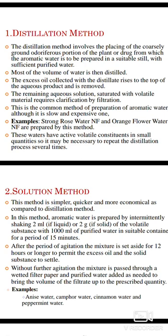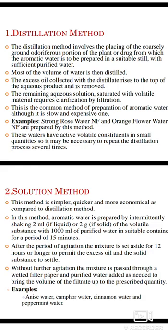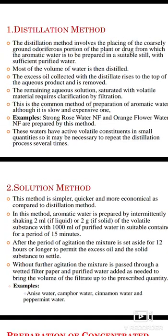The remaining aqueous solution, saturated with volatile material, requires clarification by filtration. This is the common method of preparation of aromatic water, although it is slow and expensive. Examples: strong rose water NF and orange flower water NF are prepared by this method. These waters have active volatile concentrate in small quantities, so it may be necessary to repeat the distillation process several times.